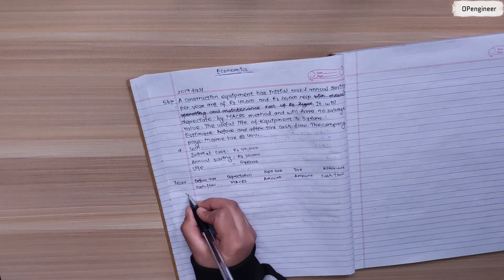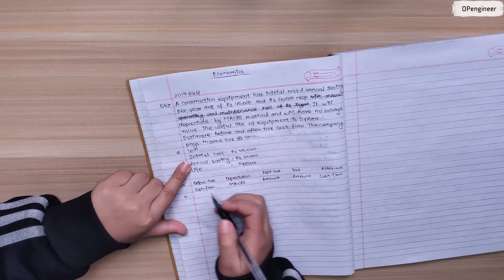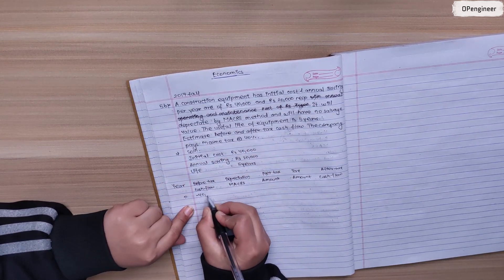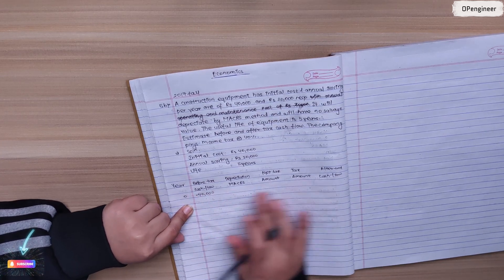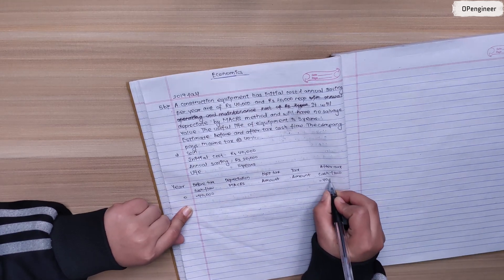For the initial cost of 40,000, in year zero before tax cash flow is minus 40,000.